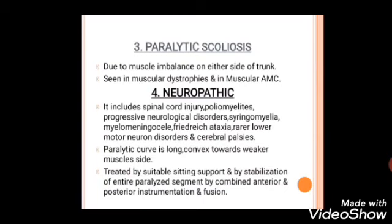Neuropathic scoliosis includes conditions such as spinal cord injury, poliomyelitis, progressive neurological disorders, syringomyelia, myelomeningocele, Friedreich's ataxia, and rare lower motor neuron diseases and cerebral palsy. The paralytic curve is long and convex toward the weaker muscle side. Treatment involves suitable sitting support and stabilization of the entire paralyzed segment by combined anterior and posterior instrumentation and fusion.